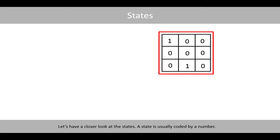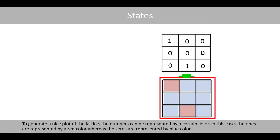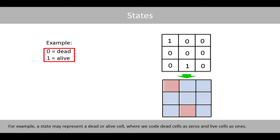Let's have a closer look at the states. A state is usually coded by a number. To generate a nice plot of the lattice, the numbers can be represented by a certain color. In this case, the ones are represented by a red color, whereas the zeros are represented by a blue color. For example, a state may represent a dead or alive cell, where we code dead cells as zeros and live cells as ones.